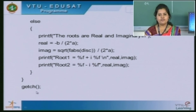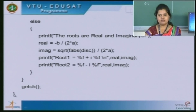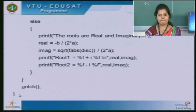Then, we are using a function called getch, which is nothing but getchar. When we enter a character from the keyboard, it exits the program. Afterwards, we have to close the flower bracket. This is the end of our program.